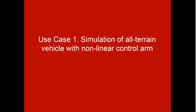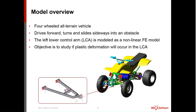Let's look at use cases. First is the all-terrain vehicle use case — a four-wheel drive ATV driving forward, turning, then skidding sideways into an obstacle. The front-left lower control arm is modeled as a nonlinear FE model in MARC, and we're trying to see if it's going to deform plastically. It would be a bad outcome for ATV manufacturers, so they want to understand what kind of velocities produce that kind of plastic deformation.